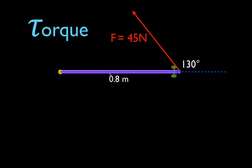This is the situation we have. We have this door — the purple bar is the door. You're looking at the door from the top, looking down on it. The door is 0.8 meters wide. This yellow circle is the hinge of the door, the axis of rotation — the door could rotate back and forth. This blue arrow is the radial vector, which runs from the axis of rotation out along the object to its end. There is a force of 45 newtons applied to the door at its end, in such a way that the force vector makes an angle of 130 degrees with the radial vector, or the extension of the radial vector. So this angle right here is 130 degrees.